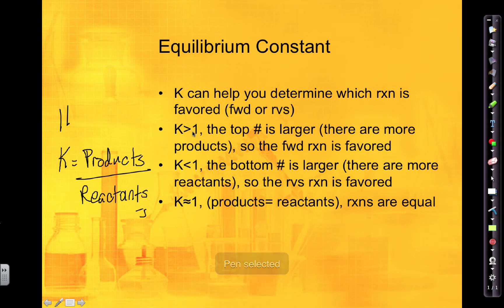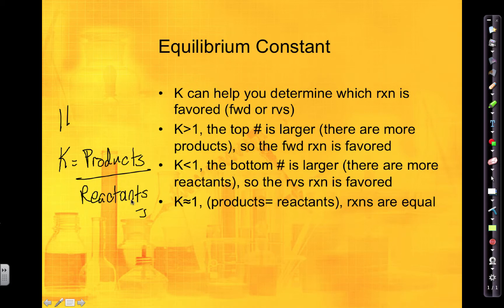K is equal to products divided by reactants. If K is greater than 1, then the top number — products — is going to be bigger, meaning you have more products than reactants, and the forward reaction is favored. If K is less than 1, the bottom number — reactants — is bigger, so the reverse reaction will be favored. If K is approximately 1, products will be equal to the reactants.